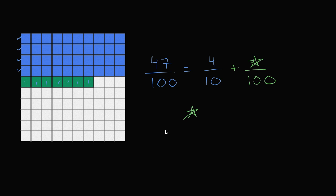So one thing that we could say immediately, is we could say that 47 over 100 is equal to 40 hundredths, 40 hundredths. You see that over here, 10, 20, 30, 40 hundredths.